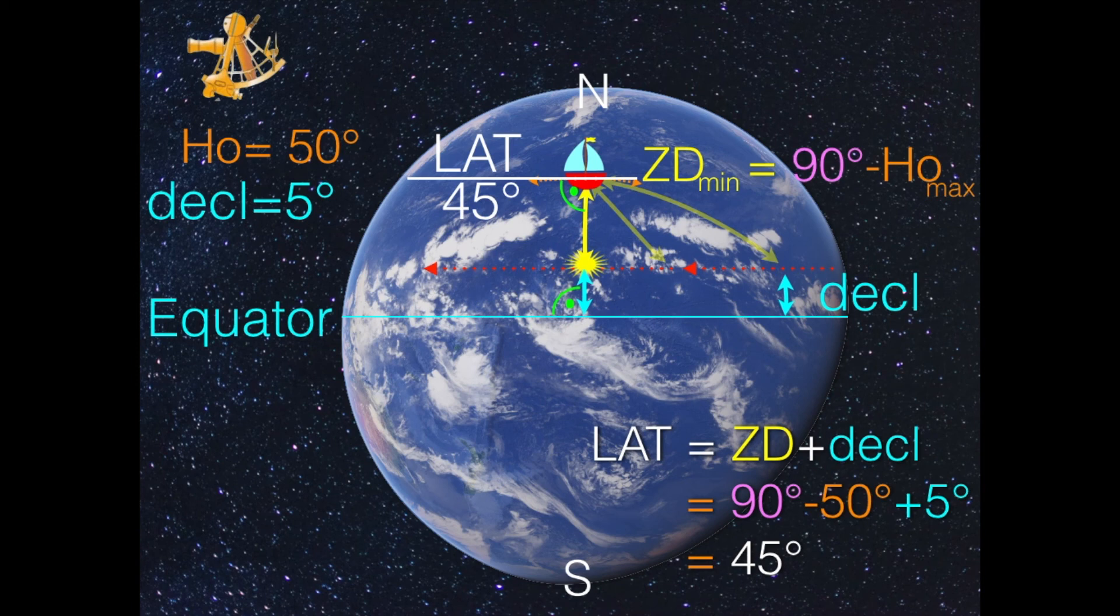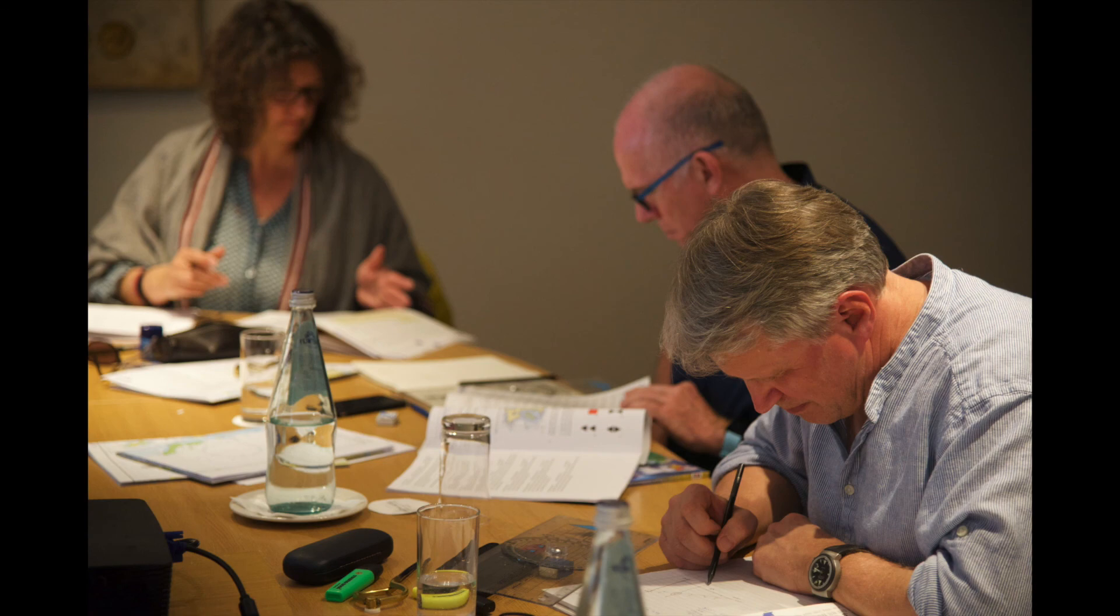It's easy then to find our latitude, since the latitude is the zenith distance plus the declination, yellow plus blue, and the zenith distance is 90 degrees minus the observed angle. So it's 90 degrees minus 50 degrees plus the declination plus 5 degrees, and in this case it's 45 degrees.